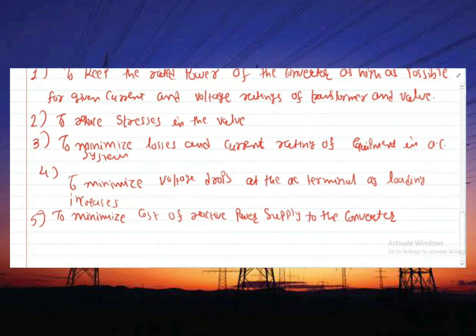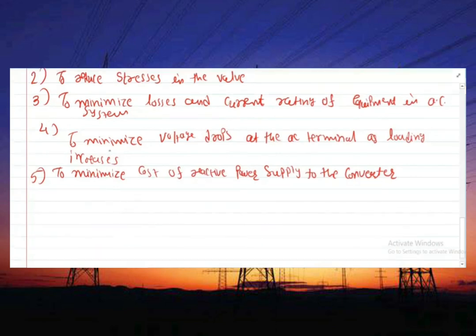As you know the equation of the power factor which is cos phi = 1/2 (cos alpha + cos delta). To achieve a high power factor, alpha for rectifier and gamma for inverter should be as low as possible. What is delta? It is alpha plus mu for rectifier operation, and gamma plus mu for inverter operation.